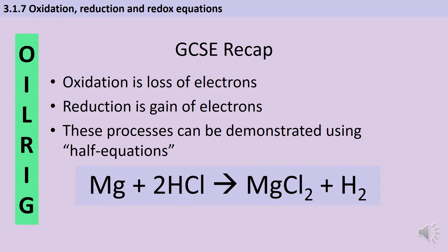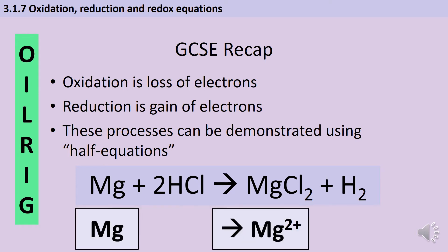We've got some magnesium reacting with some hydrochloric acid to produce some magnesium chloride and some hydrogen. If I'm going to write a half equation I'm only going to look at one of the elements. On the left hand side we've got magnesium metal in its elemental form, but on the right hand side in the magnesium chloride we have magnesium as an ion with a 2+ charge. Electrical charge must be balanced on both sides, so if we have a neutral situation on the left we also need a neutral situation on the right, and that 2+ charge has to be cancelled out by two electrons. This is the correct half equation for magnesium — the magnesium atoms on the left hand side have lost electrons, and therefore we would say that magnesium has been oxidised in this chemical reaction.